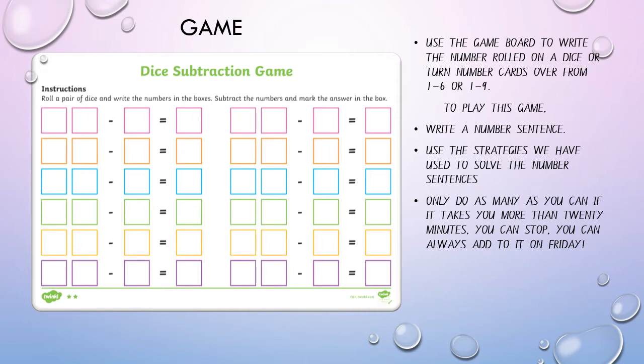Today we have a game for you. You're going to use the game board to write the number rolled on a dice, or you can turn number cards over from one to six or one to nine, depending on how challenging you want it to be. To play this game, write a number sentence and use the strategies we have used to solve the number sentence. You might want to have your hundreds chart out, your number lines and counters, things like that to help you with this.